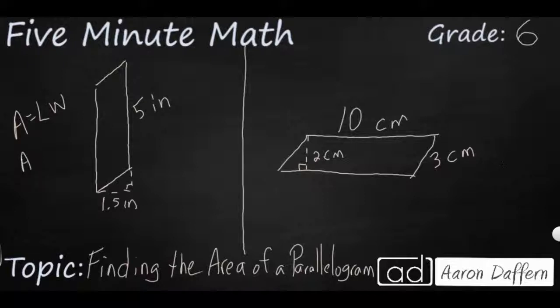So in this case, we're going to take our length of five inches and multiply that by our height or width, and that's going to be 1.5 inches. So 5 times 1.5, that is going to be 7.5, and please remember it is inches squared since we are looking at area.